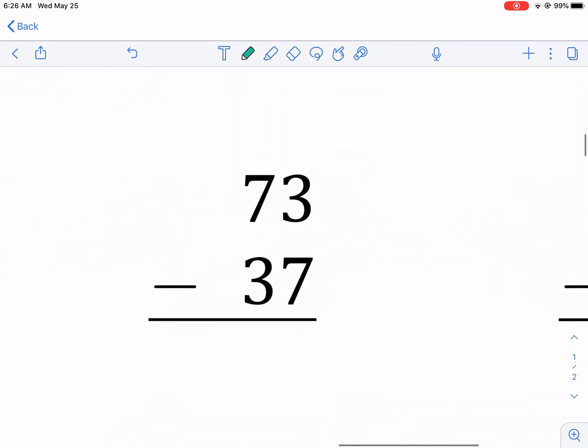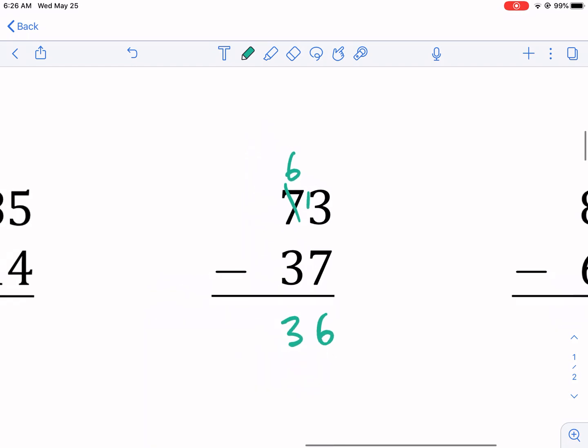Here's another one that we have borrowing. 3 minus 7 can't do it. I'm going to borrow, put 6, add the 1 to make, you know, borrow from the 10s place. 13 minus 7, we just did that. That's 6. And then we have 6 minus 3, 36.